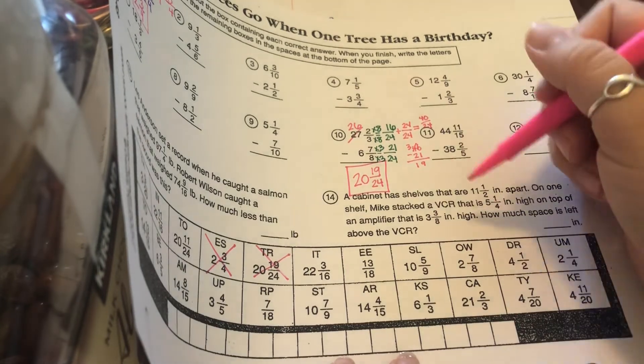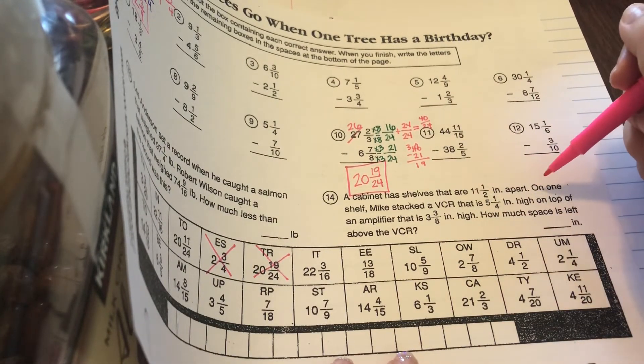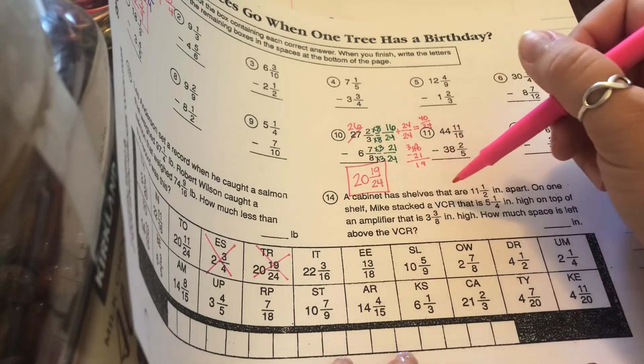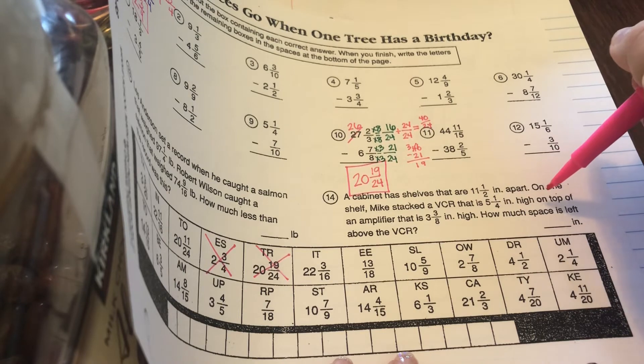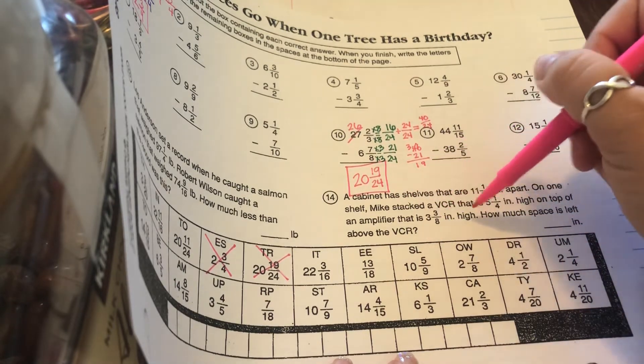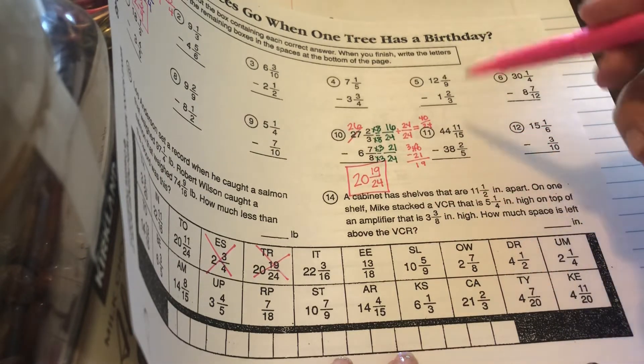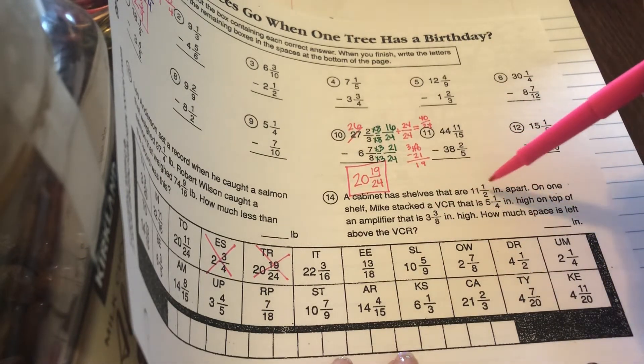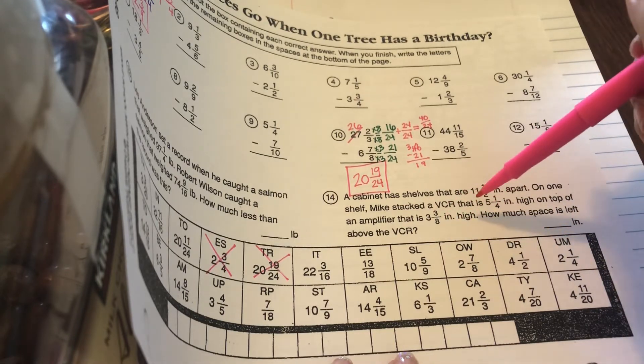It says a cabinet has shelves that are 11 1⁄2 inches apart. On one shelf, Mike stacked a VCR that is this high, inches high on top of an amplifier that is this many inches high. How much space is left above the VCR? So, this is how far apart they are, and this is how much he has of stuff on it, and he wants to know how much space is left.